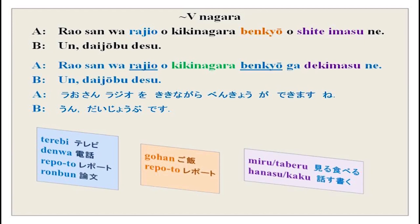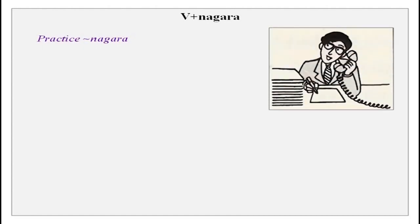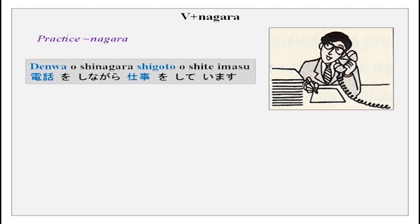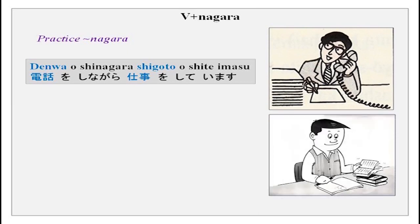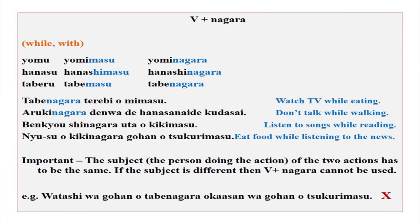Rao san wa rajio wo kikinagara benkyou ga dekimasu ne — you are able to study while listening to the radio. Daijobu desu. Practice: this gentleman is talking on the phone and writing — denwa de hanashinagara shigoto wo shite imasu. And Rao san: benkyou shinagara rajio wo kiite imasu — listening to radio while studying. Whenever you do two activities simultaneously, the nagara form can be used very easily.